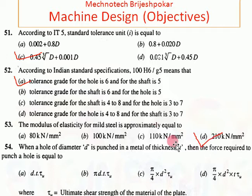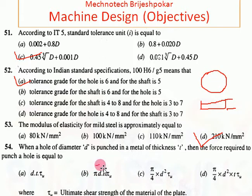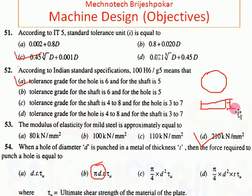Here there is a circular hole having diameter d. To punch this hole, we consider the area and thickness. The cross-sectional area is π·d (circumference) multiplied by the thickness t. So the answer is π·d·t·τ.